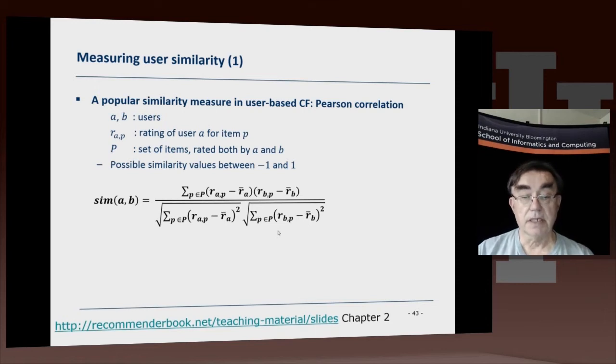And this is designed so that if A and B are very similar, we will get a similarity of 1. Because if A and B are similar, R_A of P equals R_B of P, means are the same. And you will find out that this similarity is defined here as exactly 1. So similarity of 1, A and B are similar. Similarity of minus 1, they're really very different.